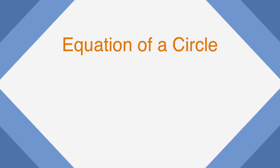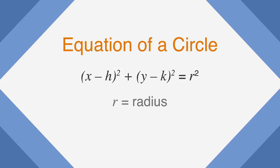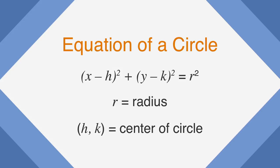The SAT will want you to know this formula for the equation of a circle: x minus h, quantity squared, plus y minus k, quantity squared, equals r squared. In this equation, r represents the radius of the circle and h and k tell you that the center of the circle is at point (h, k).